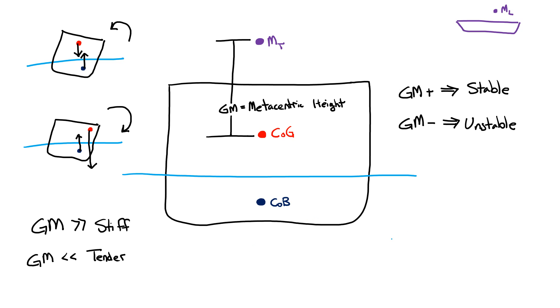So let's show this in an example. We have a ship where we're going to vary the metacentric height. So we have our center of buoyancy, and then we have our center of gravity which we're just going to put here for this example.